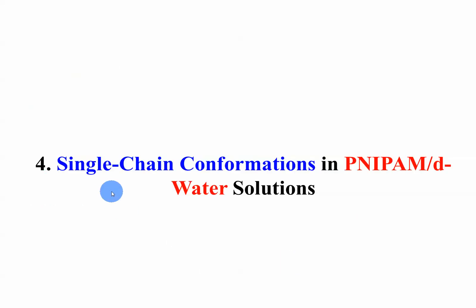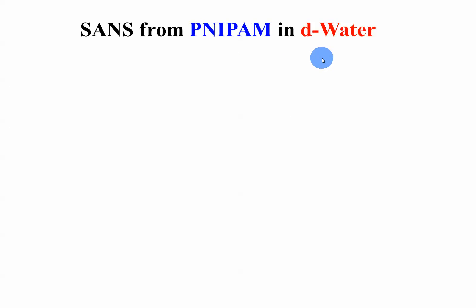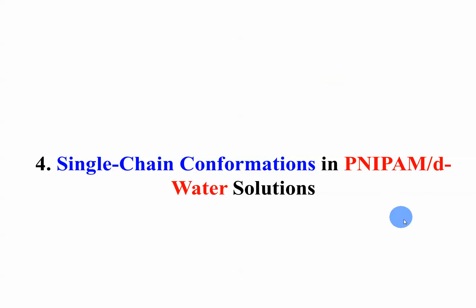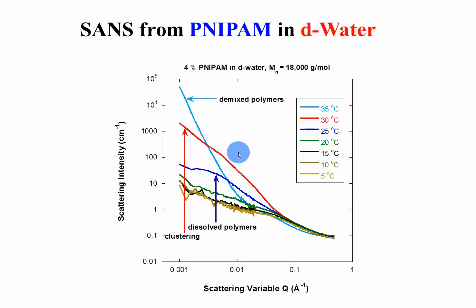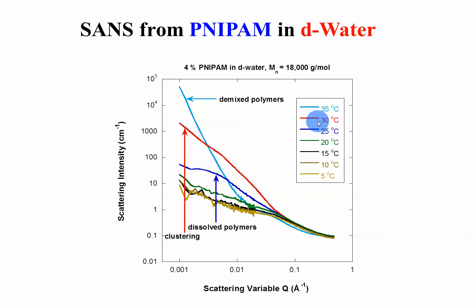The last research project: single chain conformations in NIPAM-water solutions. In pure water at 4% concentration over an 18K range of temperatures, we see that at low temperature the polymer is well dissolved — it's a one-phase region. At high temperature it's completely phase-separated. The LCST is estimated to be 32 degrees C. At 35 degrees it's completely phase-separated with completely different behavior. In between we see the onset of phase separation, which we would like to investigate more closely. We see the solvation feature and the low-Q clustering feature.